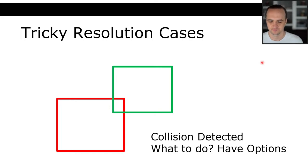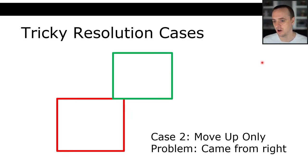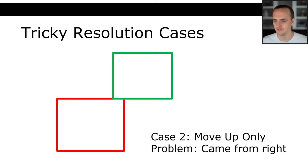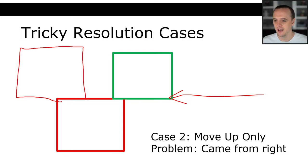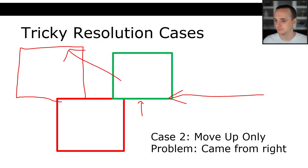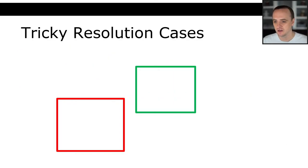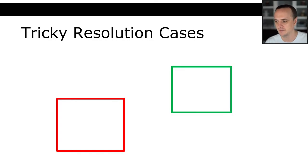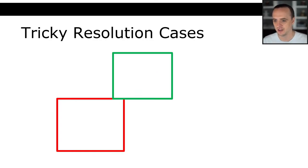In the first option, maybe we want to push it upwards. That might be the case if you're doing stairs: if someone comes from the right and there's not a significant horizontal overlap, we actually want to push them up so they can keep going up the stairs. In that case, we would go left, left, left, and then push them up.